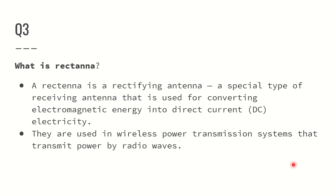What is a rectana? Rectana is nothing but a rectifying antenna. It is a special type of antenna used for converting electromagnetic energy into direct current. This conversion is called rectifying, and rectana is meant to do it. They are used in wireless power transmission systems that transmit power by radio waves. Remember this is a very important interview question: a rectana is a rectifying antenna that converts electromagnetic energy to direct current and is used in wireless power transmission systems.